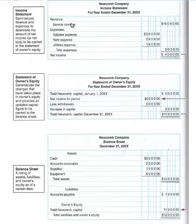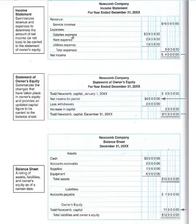On the income statement you'll see the revenue heading, and underneath it you'll list the revenues for the period — this comes from your books or the spreadsheet you've been putting together. Total revenues were ten thousand, listed in the right-hand column. Then you have the expenses heading; underneath it you list each expense with the amount in the left-hand column, and the total of all expenses in the right-hand column.